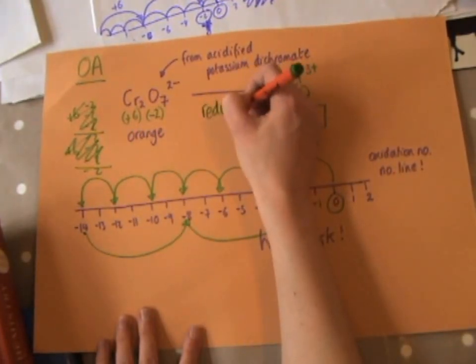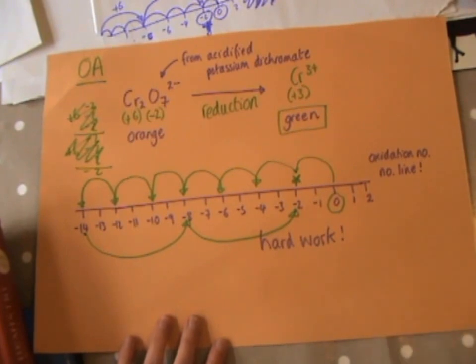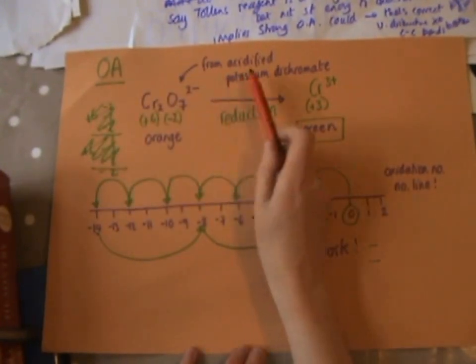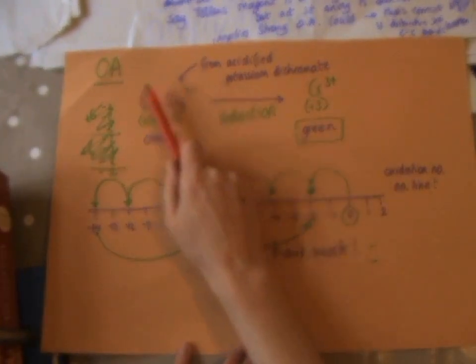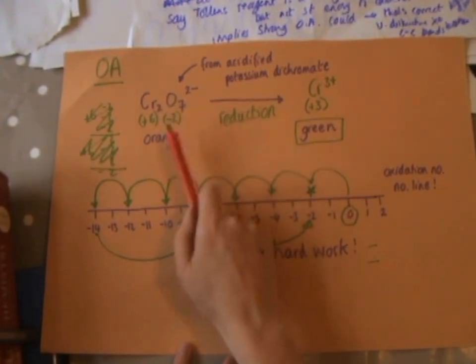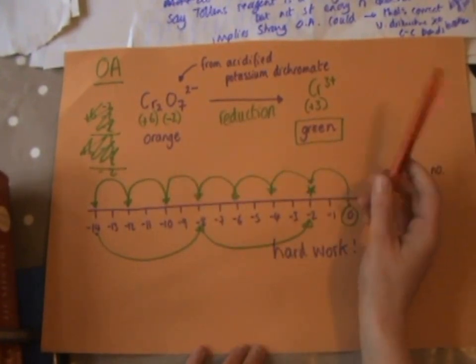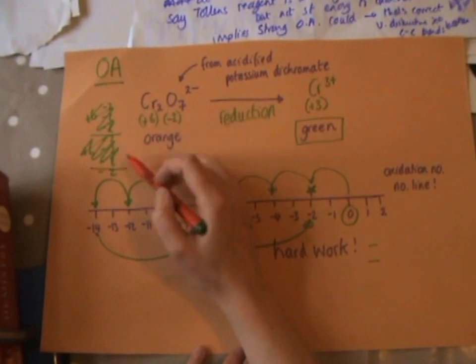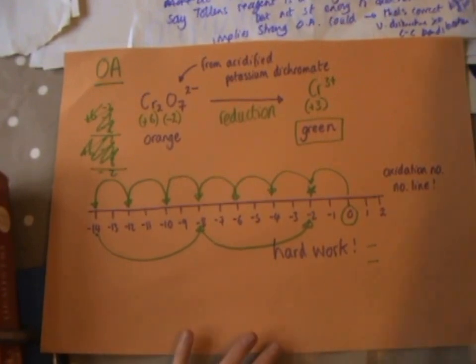The oxidation number of each chromium is plus six, and that goes down to plus three — proving this is the reduction half of the reaction. So, an aldehyde oxidizes and turns acidified potassium dichromate from orange to green as the oxidizing agent is reduced. A ketone that doesn't oxidize will leave the acidified potassium dichromate orange. That's one method, but there is another option: using a different oxidizing agent.